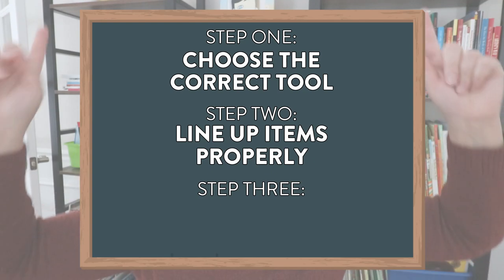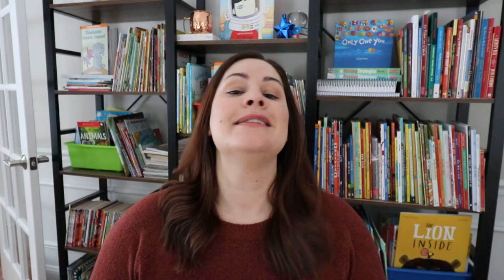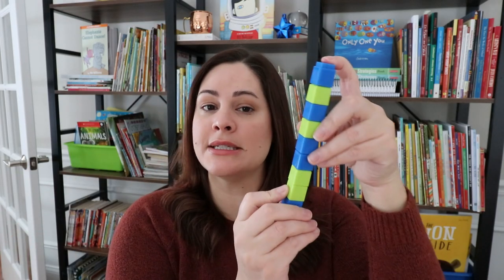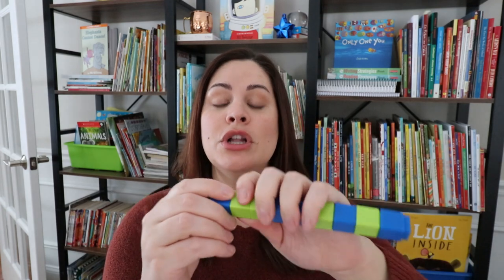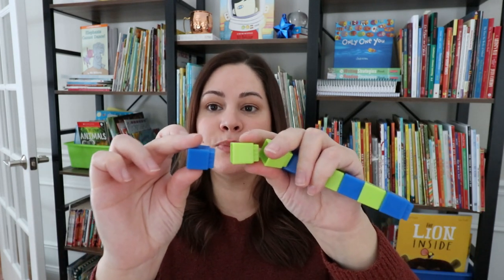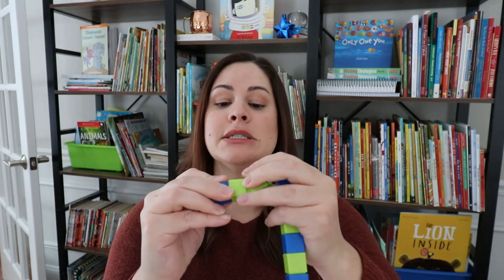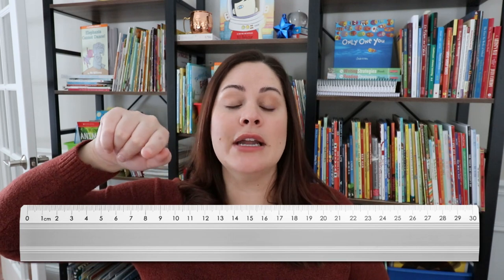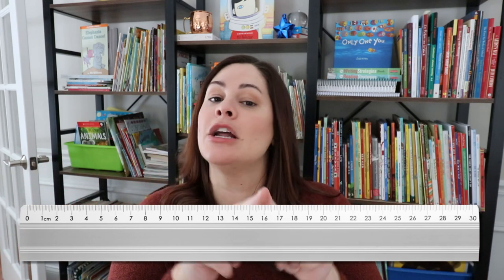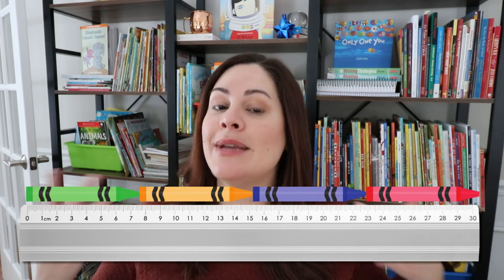The third thing is to not overlap or leave spaces in the measuring tool. For non-standard measurement using cubes, students must not leave spaces in between — they won't get an accurate measurement. They need to stack up the cubes, or if they're using paper clips, go end-to-end without overlapping. With a ruler there won't be gaps, but students also need to learn that when measuring items like crayons lined up along a ruler, those crayons cannot overlap one another and cannot have gaps between them. They have to go end-to-end so we can get an accurate measurement.